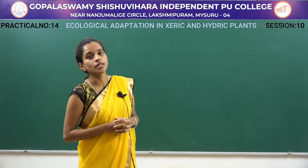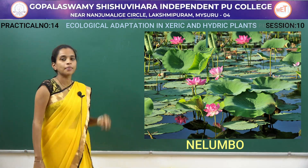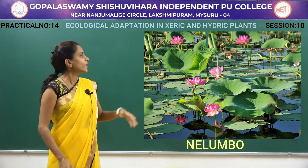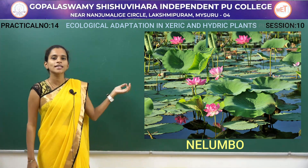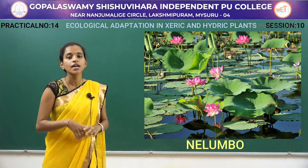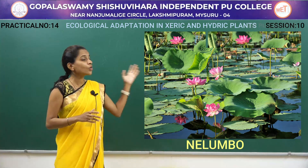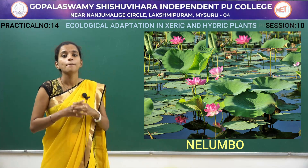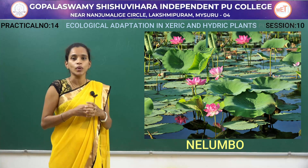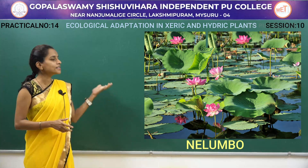Next is about hydric plants. The first hydric plant you can see here is Nelumbo, commonly called lotus. When it comes to the lotus plant, you can see that it has leaves which are floating. They have floating leaves with a very long, thin, or slender petiole. This floating function is carried out by the presence of aerenchyma tissues which store air within. That is how they overcome the hydric condition.